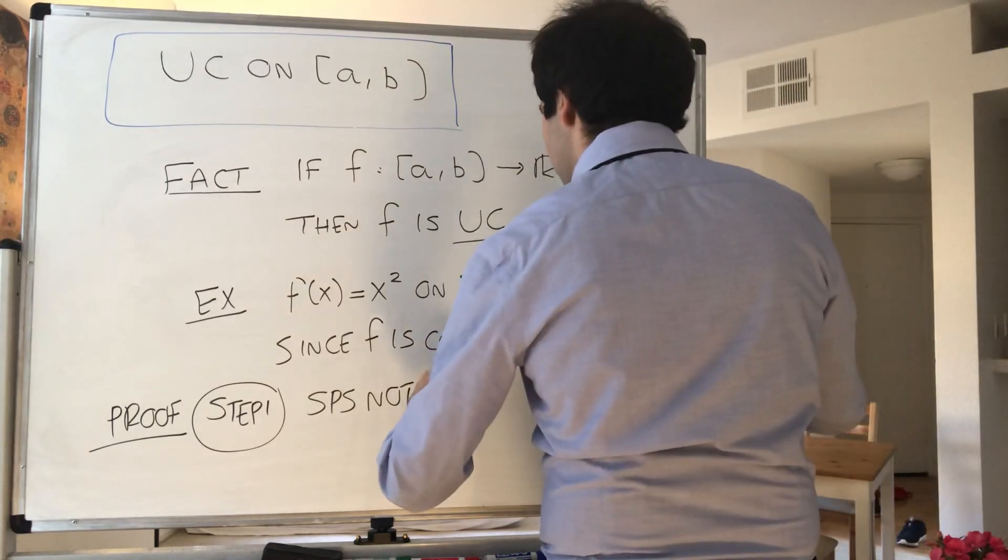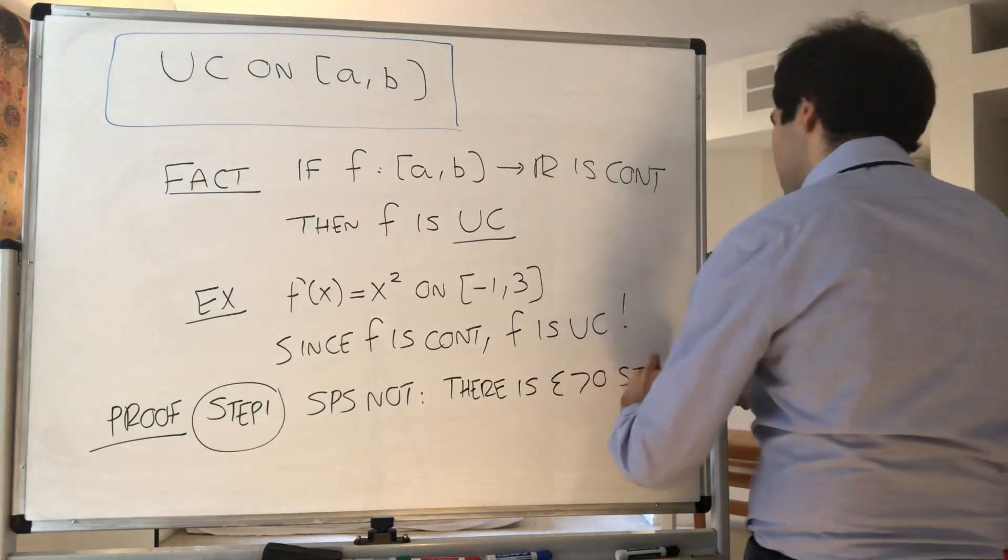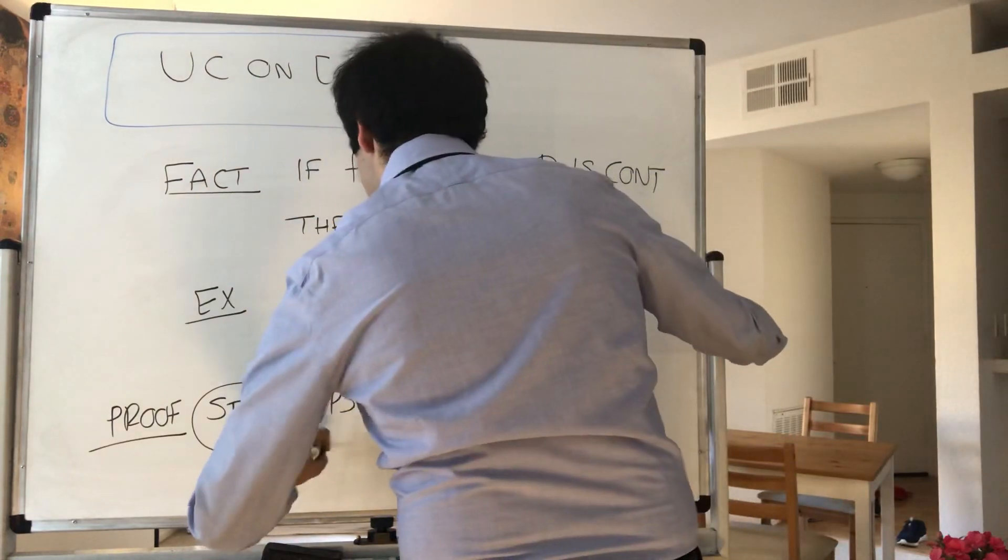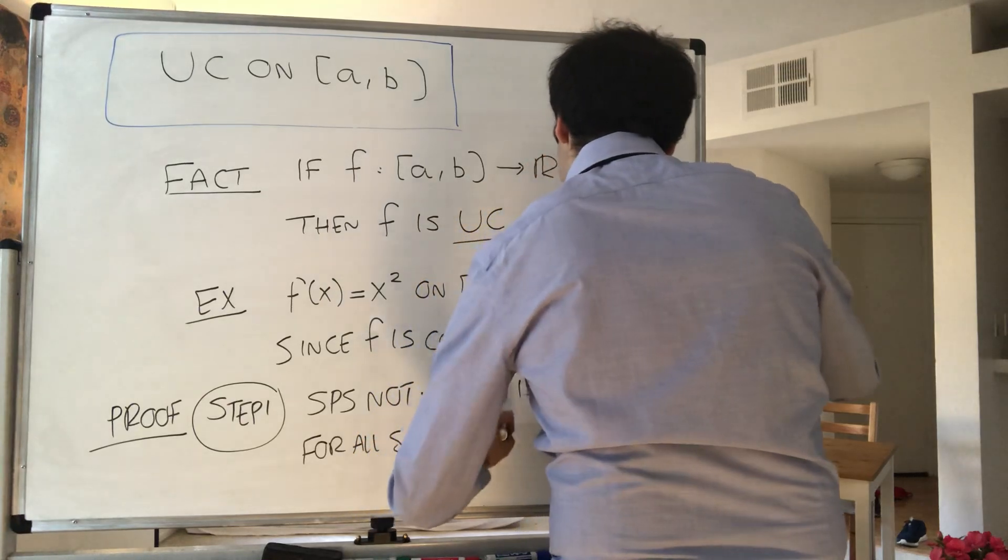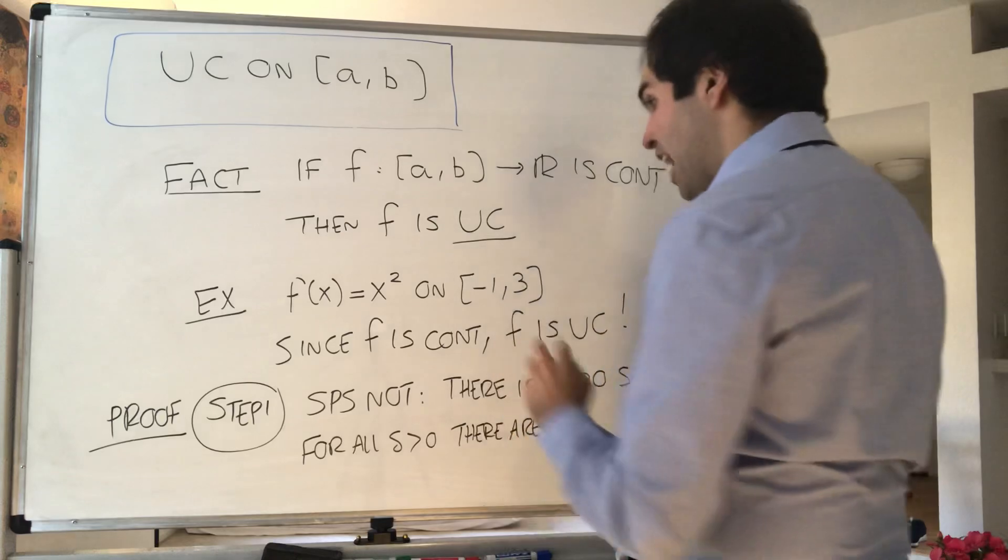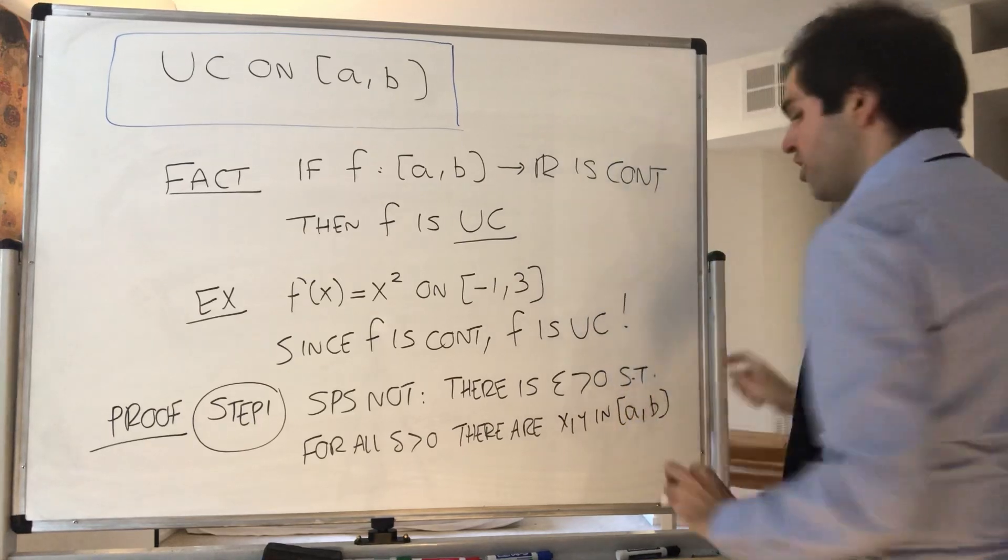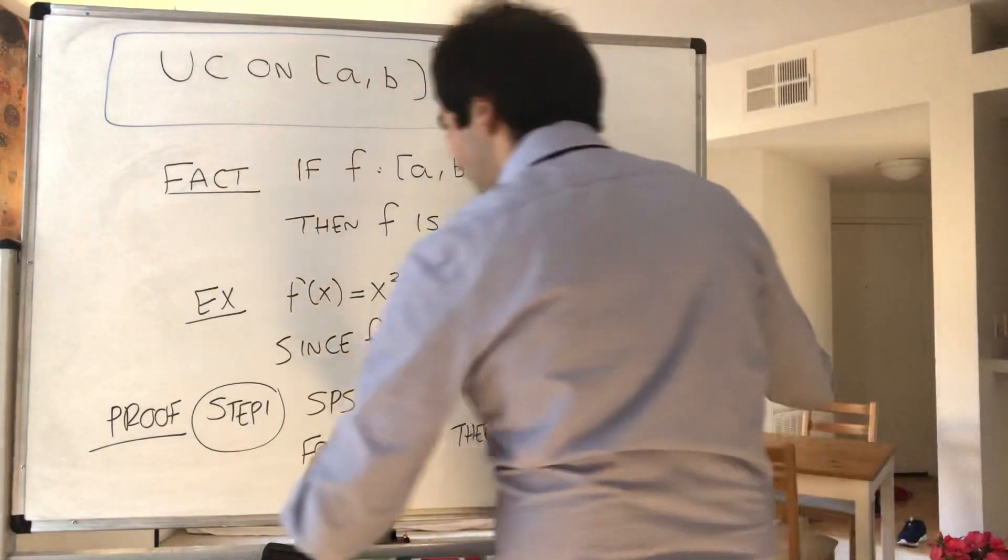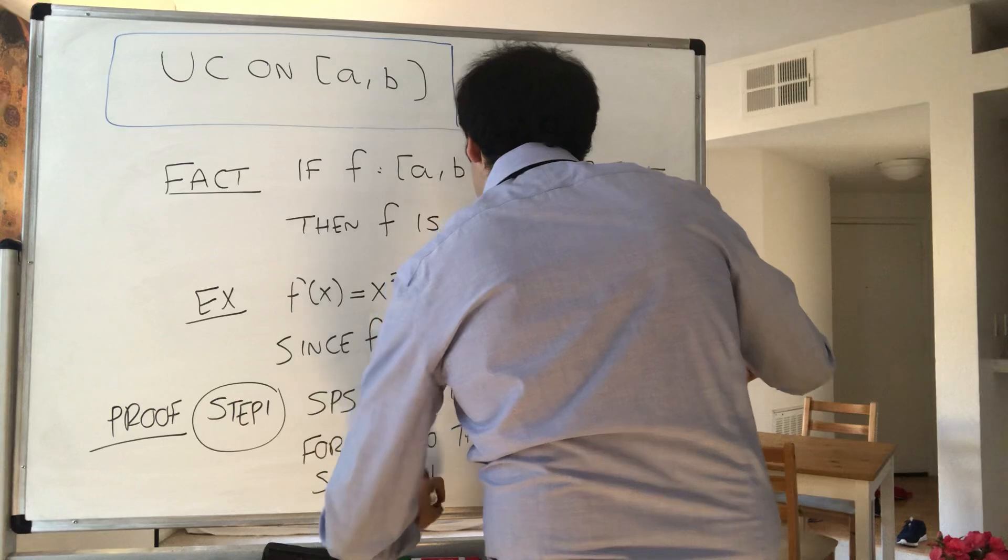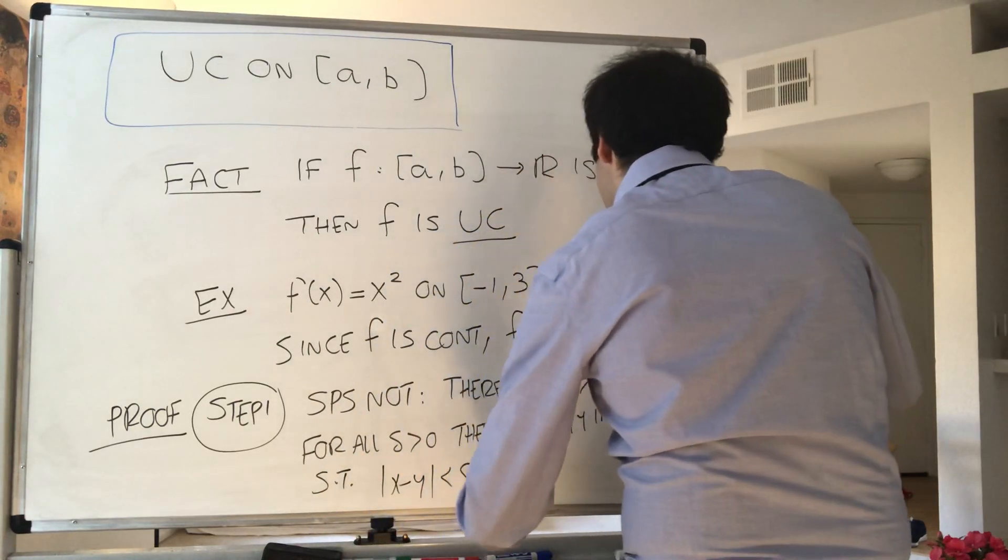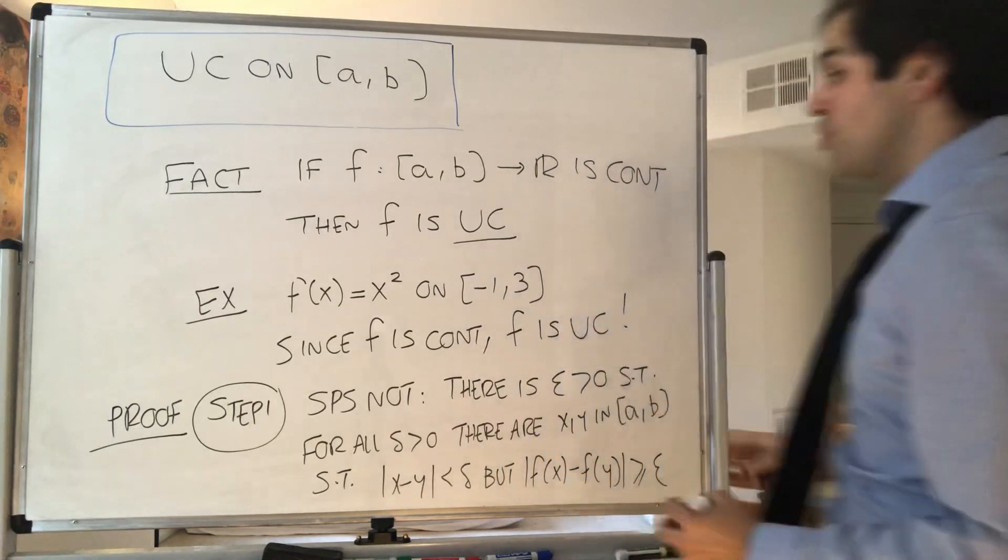Therefore, what this means is there is some pesky epsilon such that for all delta, there are counter examples x and y in [a,b] that are delta-close but whose outputs are at least epsilon apart, such that |x - y| < delta but |f(x) - f(y)| ≥ epsilon.